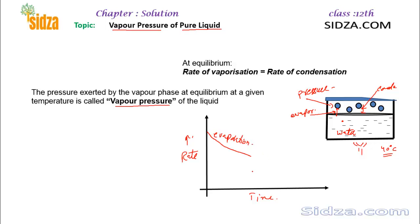At the same time, the rate of condensation increases — initially almost zero when there are no vapors, but as the concentration of vapors increases, more and more vapor molecules change into the liquid state. Evaporation decreases and condensation increases until a point is reached where both rates are the same — that is the equilibrium state, and that is the time taken to reach equilibrium.